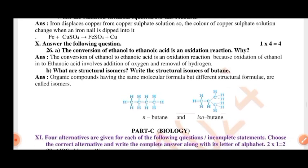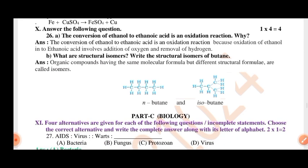Answer the following questions. The conversion of ethanol to ethanoic acid is an oxidation reaction. Why? What are structural isomers? Write the structural isomers of butane.